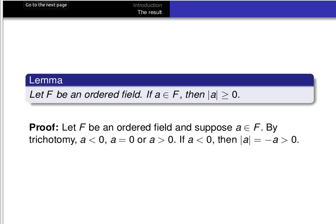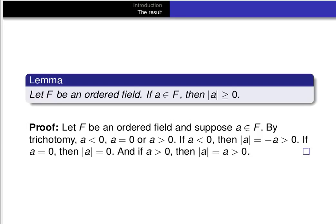If a is less than 0, then we define the absolute value of a to be the additive inverse of a. And if a is less than 0, then the additive inverse of a is greater than 0 — you can convince yourself of that by adding the additive inverse of a to both sides of a < 0. So if a is less than 0, the absolute value of a is greater than 0. If a is equal to 0, then the absolute value of a is equal to 0 by definition. And if a is greater than 0, the absolute value of a is defined to be a itself, which is greater than 0 by supposition. So in all three cases given by trichotomy, the absolute value of a is greater than or equal to 0.